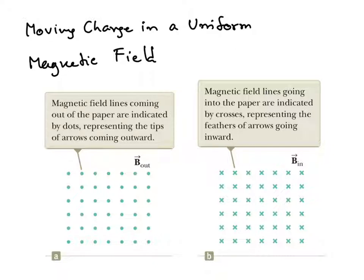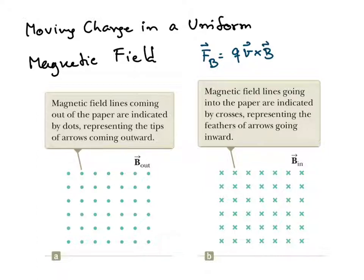If a charged particle moves in a region that has a magnetic field, the magnetic field will exert a magnetic force on the particle. We have discussed this before — the magnetic force is equal to QV cross B. From this formula, we need to involve three-dimensional vectors, because of the term V cross B.